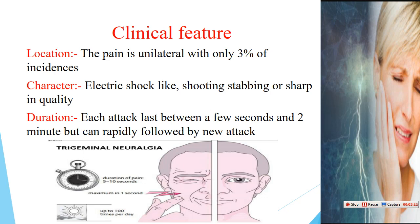The characteristic of this pain is electrical shock-like, shooting or stabbing pain — it is sharp in quality. Duration: each attack lasts between a few seconds and 2 minutes, but can be rapidly followed by a new attack. Patients may suffer up to 100 attacks per day, each lasting 5 to 10 seconds, followed by a new attack — severe shooting pain, unilaterally.